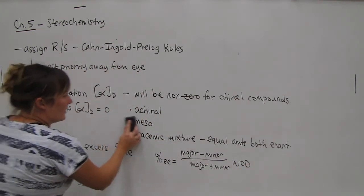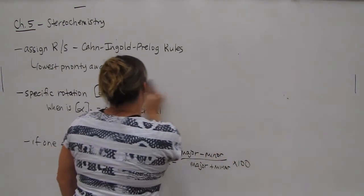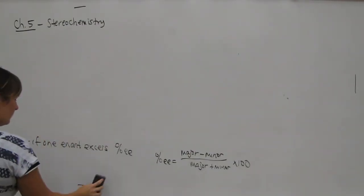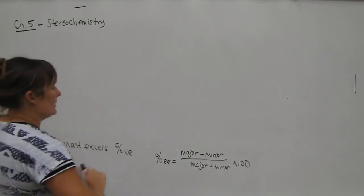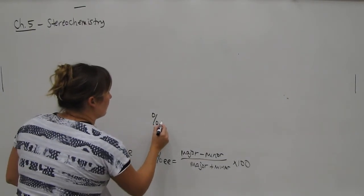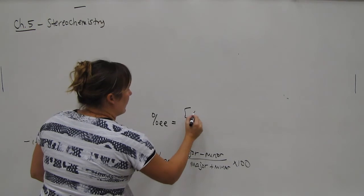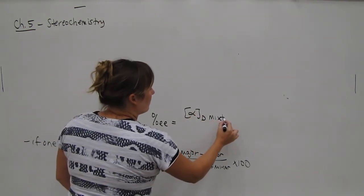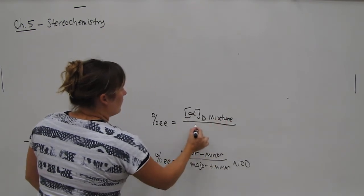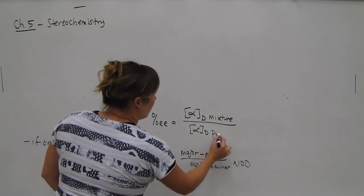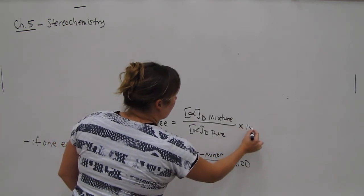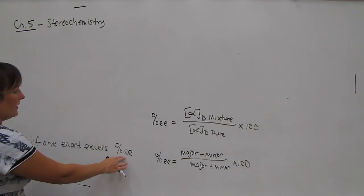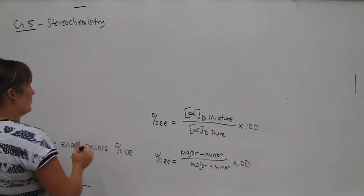The second formula is percent EE equals the alpha D, or specific rotation of the mixture, over alpha D of the pure times 100. And remember that one enantiomer kind of dilutes out the other enantiomer.